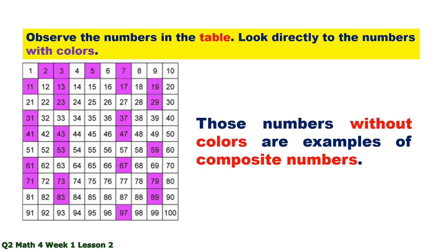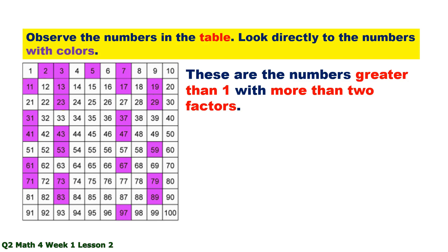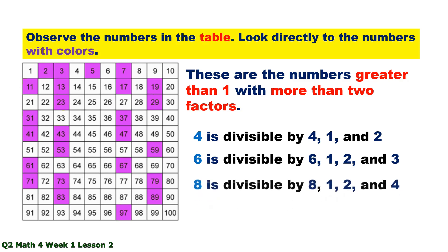Those numbers without colors are examples of composite numbers. These are the numbers greater than 1 with more than two factors. 4 is divisible by 4, 1, and 2. 6 is divisible by 6, 1, 2, and 3. 8 is divisible by 8, 1, 2, and 4.